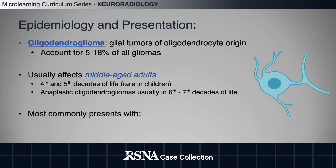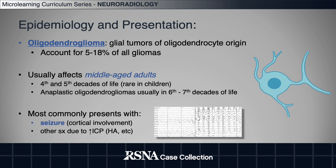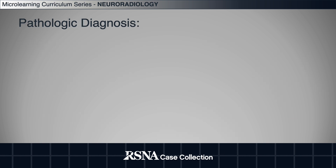The anaplastic, or grade 3 form, is usually seen a bit later in life. Most commonly, these tumors will present with seizure, likely due to the cortical involvement, and other symptoms related to increased intracranial pressure, such as headache.